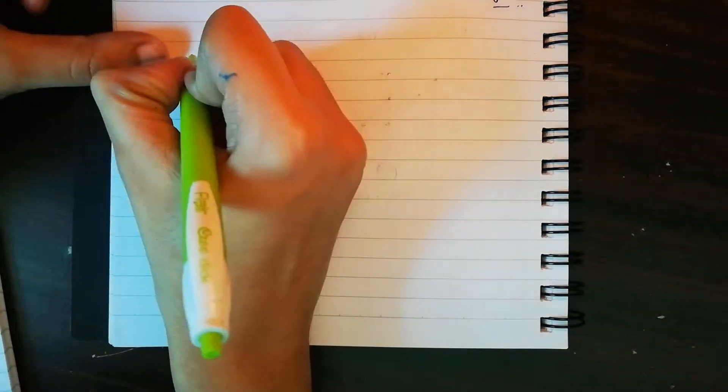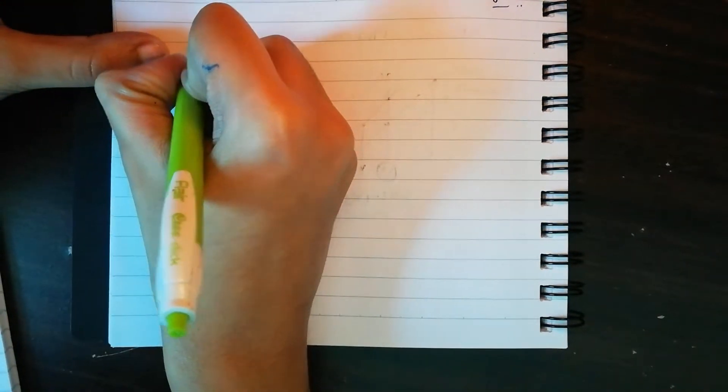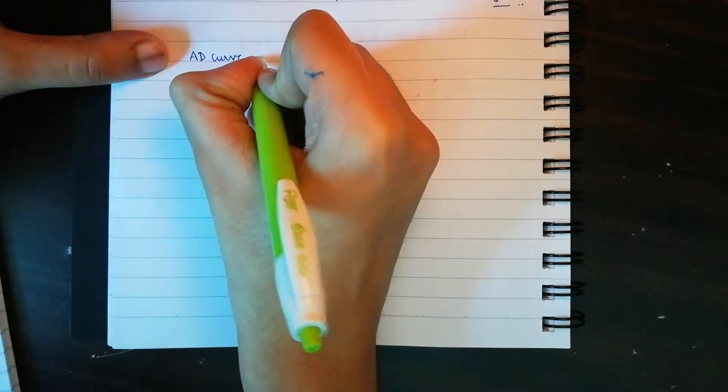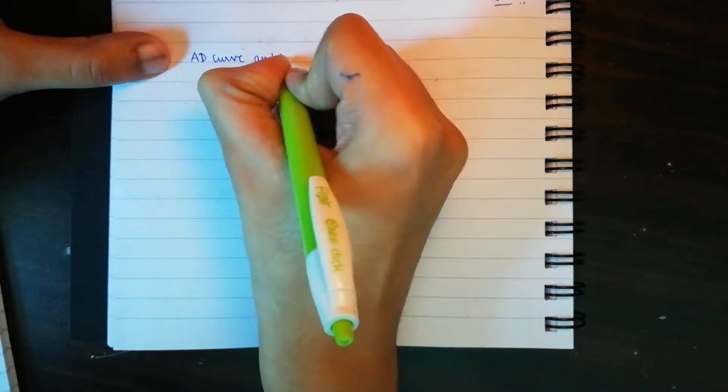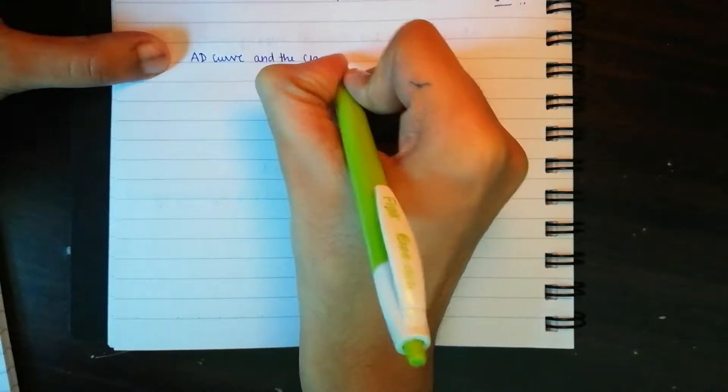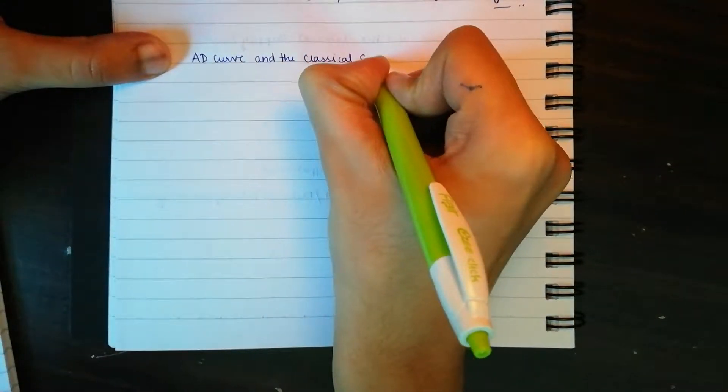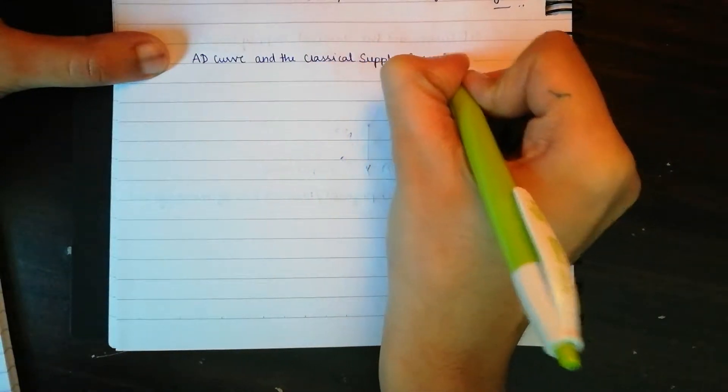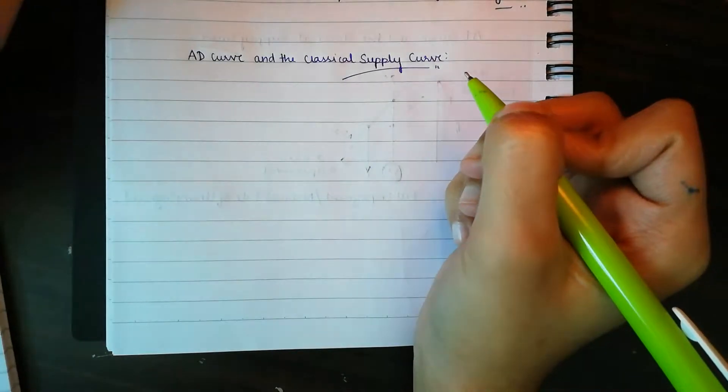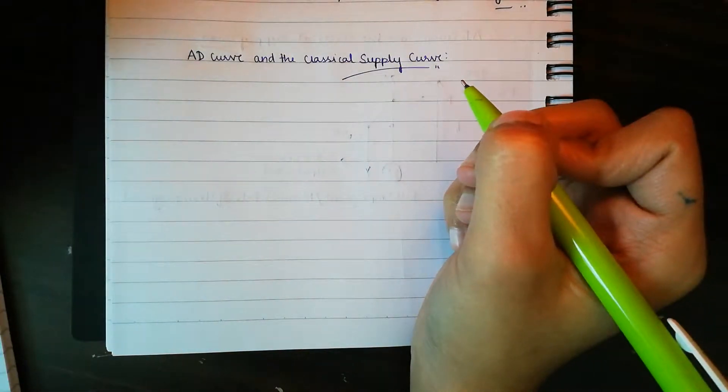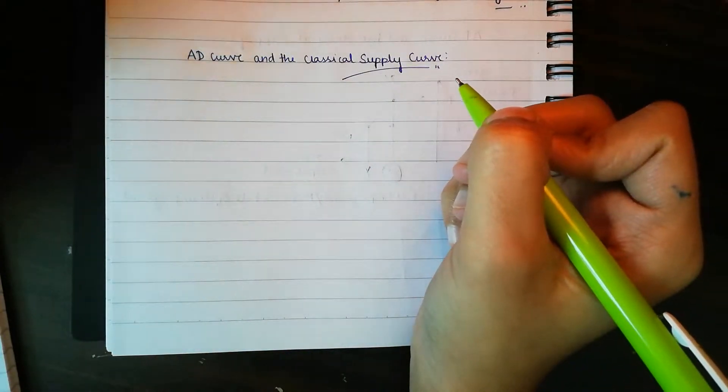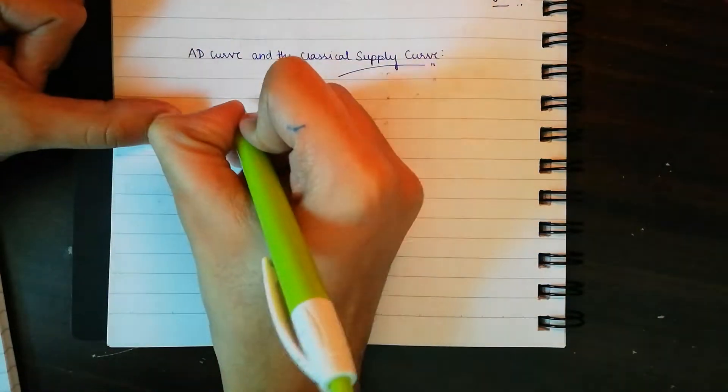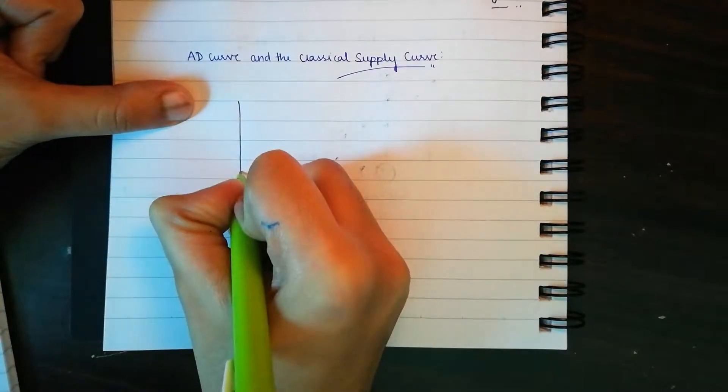In this video I want to give you a short explanation on the relationship between the AD curve, the aggregate demand curve, and the classical supply curve. Now just for a recap, the classical supply curve is a vertical supply curve that operates at full employment in an economy. Now I'll show you the diagrammatic relationship between the two curves.